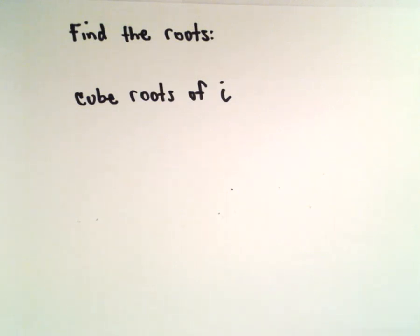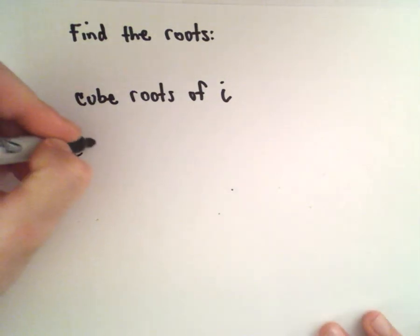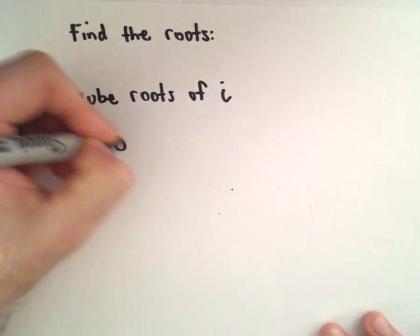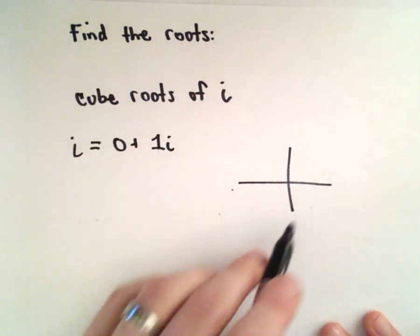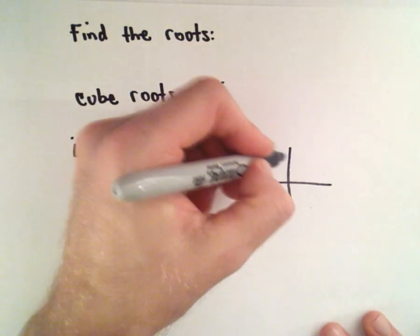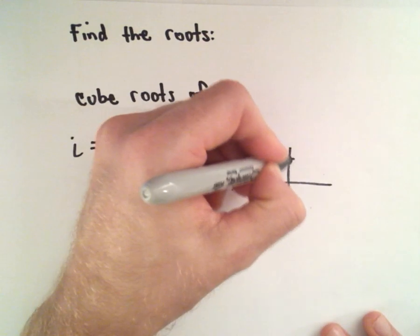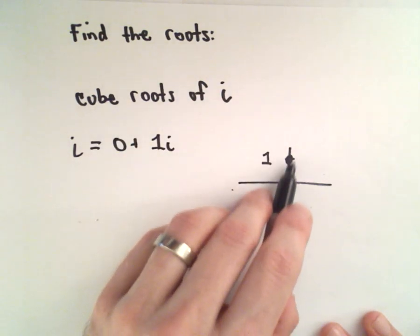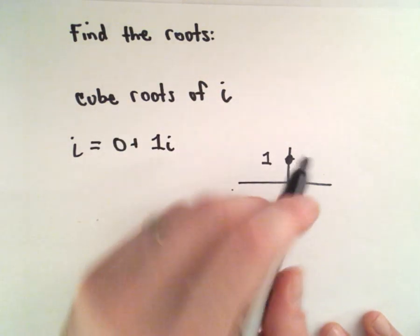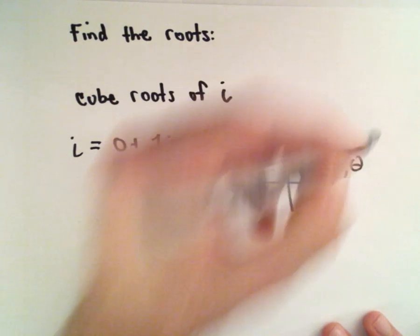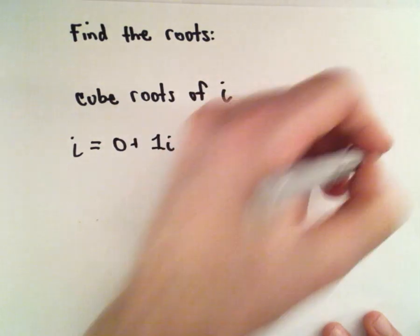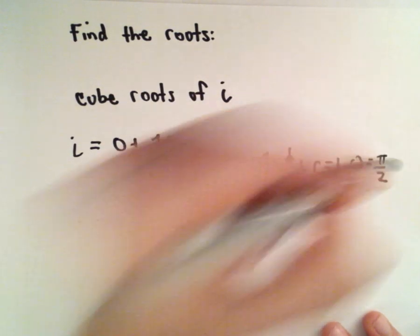In this example we're going to find the cube roots of i — the three distinct roots of i. I'm going to write i as a complex number: 0 plus 1i. If you think about graphing that complex number, it's just sitting one unit up on the imaginary axis. So our r value will be 1, and we use the theta value of pi over 2.